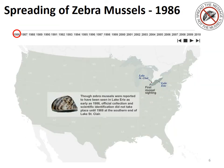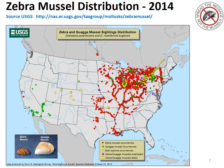Zebra mussels were first identified in 1986 in Lake Erie. Unfortunately, zebra mussels have distributed greatly throughout the United States. Here is an updated map reflecting, as of 2014, the prolific spread of zebra and quagga mussels throughout the United States.